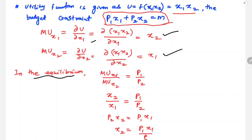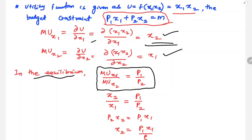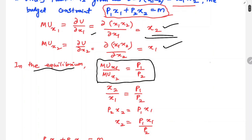In equilibrium, x2/x1 = p1/p2. Cross multiplying: p2 · x2 = p1 · x1, so x2 = p1·x1 / p2.